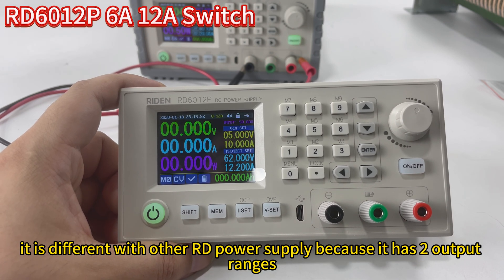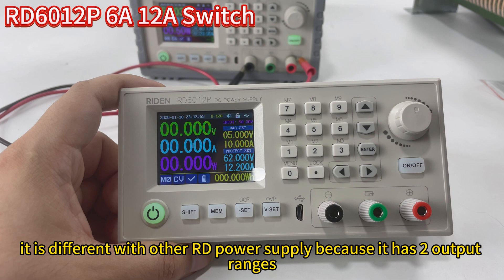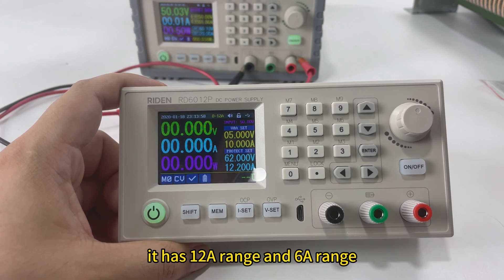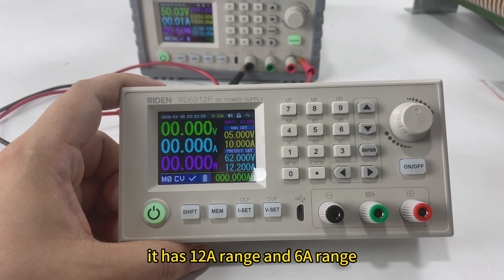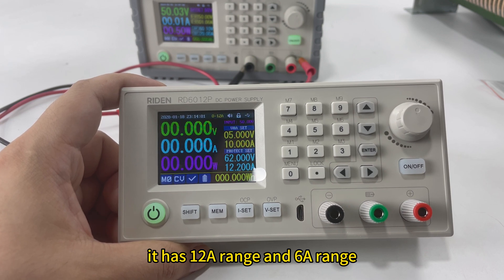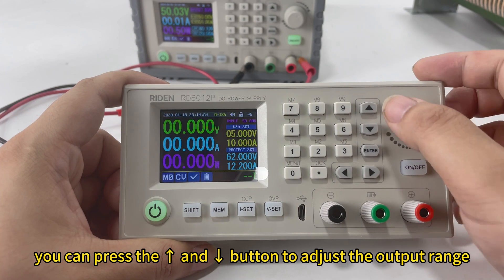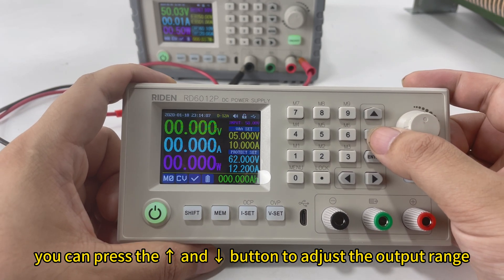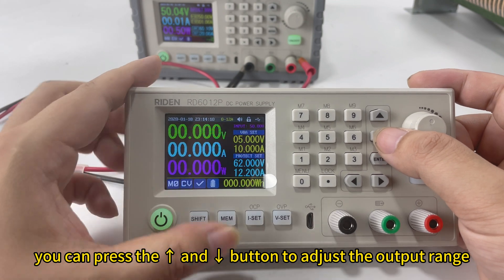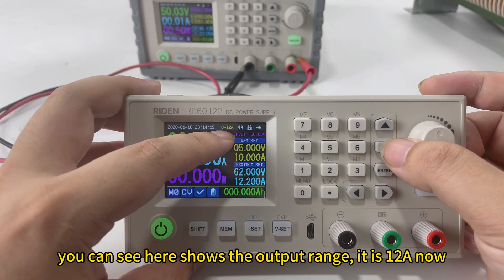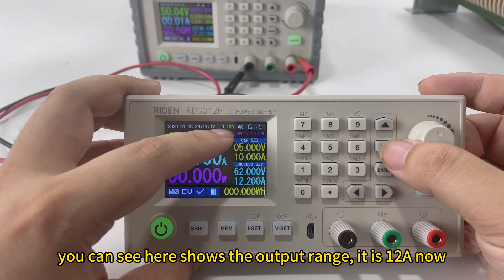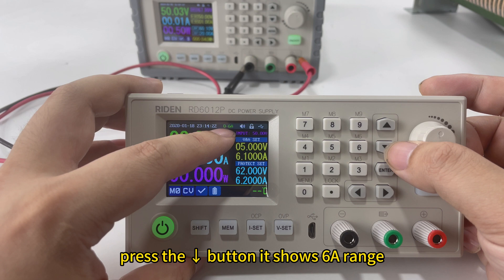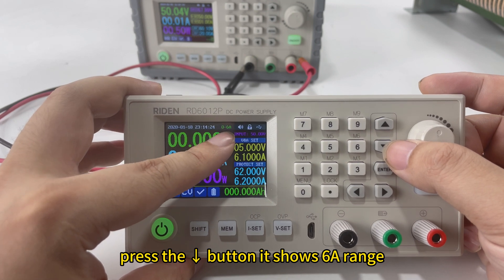It is different from other RD series power supplies because it has two output ranges. It has a 12A range and also a 6A range. You can press the up button and the down direction button to adjust the output range. You can see here it shows the output range. Now it is 12A and I press the down direction button and it turns to 6A.